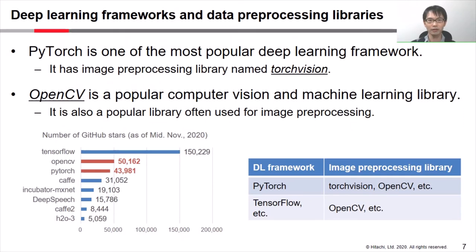I'd like to talk about open source deep learning frameworks and data preprocessing libraries. There is a lot of open source software in this category. The lower left graph shows the popular frameworks and libraries. As you can see, TensorFlow and PyTorch have become very popular deep learning frameworks. PyTorch has an image preprocessing library named TorchVision.